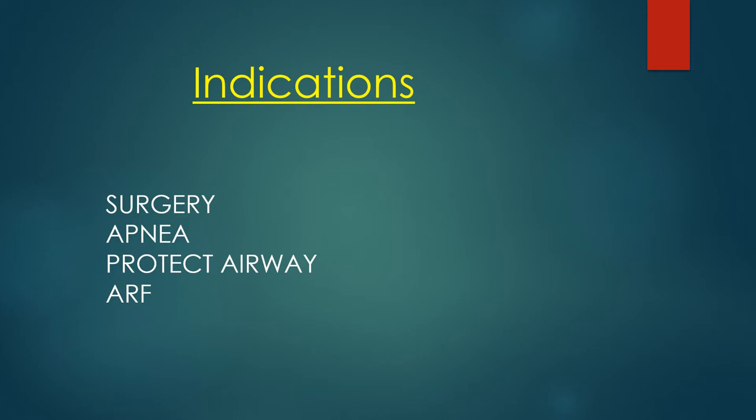Another reason we might intubate a patient is to protect the airway. Sometimes patients have a stroke or age-related issues causing them to aspirate food and liquids. Those patients will probably not get an endotracheal tube but rather a tracheostomy tube. A patient may also be overwhelmed with thick secretions they can't cough up, so we place an endotracheal tube to suction and maintain them on a ventilator until their secretions normalize.